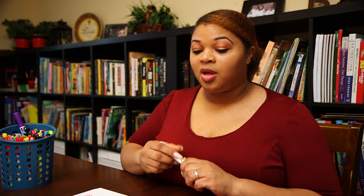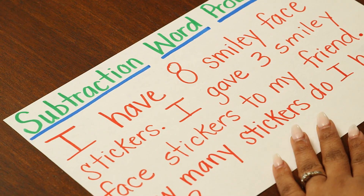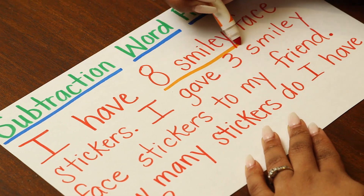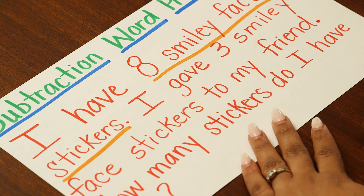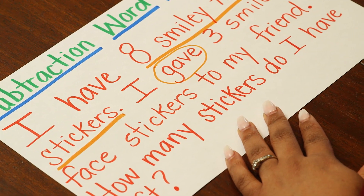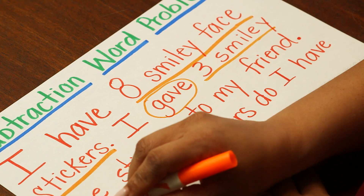So first I want to look at my word problem and see what it tells me. Because remember, there's always information that lets you know what to do. So first I know I have eight smiley face stickers, so I'm working with eight. I like to underline my information so I can go back to it in the text. I gave three smiley face stickers to my friend — a key word there is going to be 'gave.' That's very important because that lets me know that I don't have it anymore. How many did I give? Three smiley face stickers.